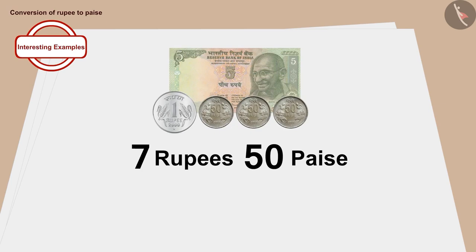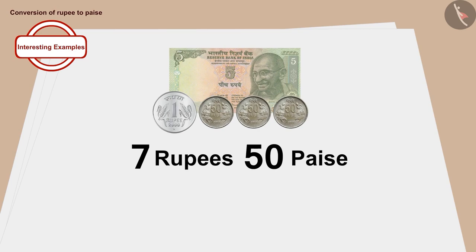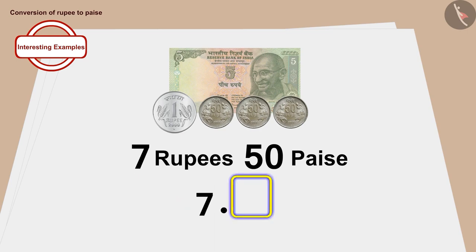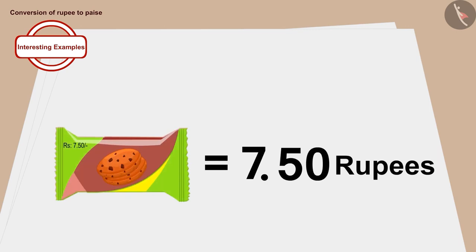How do we write this using a dot? It is very easy! Make a point like this. The number of rupees is on the left side of the point, that is 7, and the number of paise is to the right of the point, that is 50. In this way, we can write the price of a packet of biscuits in rupees and paise.